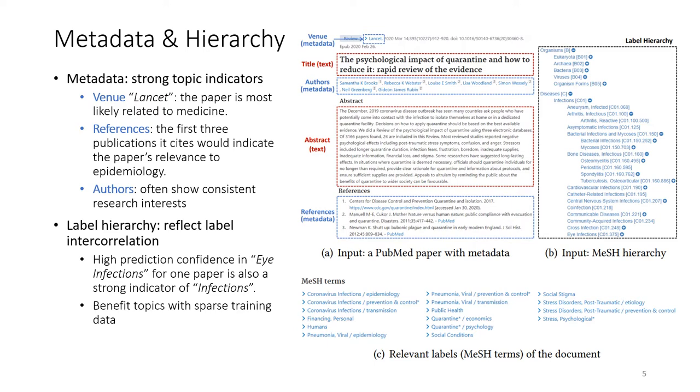And also authors often show consistent research interests, which could be another strong indicator of topics. And we also show a segment of the large-scale MeSH hierarchy here, where we can see that label hierarchy actually reflects label inter-correlation. For example, we can see the node 'eye infections' is a child of the node 'infections.'